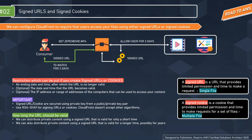We need to understand how long the URL should be valid. We can distribute private content using a signed URL valid only for a short time, or one that is valid for a longer time — possibly years. The difference between signed URL and signed cookies: a signed URL provides limited permission and time to make a request and is generally used for single files — one file has one URL. A signed cookie provides limited access and time to make requests to a set of files, so it can be used for multiple files. For example, 50 files can all share the same cookie header.